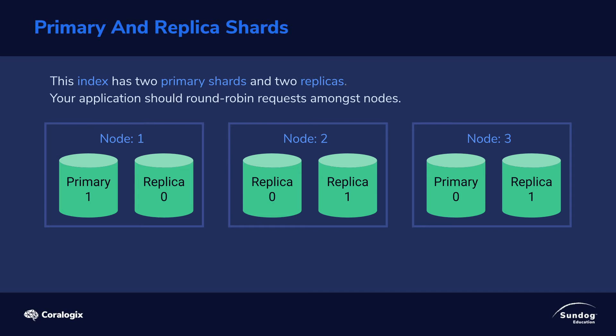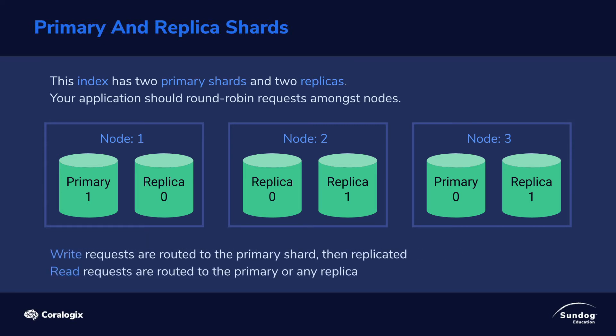You can actually do more than one node per server if you want, but it would be a little bit weird to do that. The design is such that if any given node in your cluster goes down, you won't even see it as an end user — you can handle that failure. I have two primary shards, which are basically the primary copies of my index data, and that's where write requests are going to be routed to initially. That data will then be replicated to the replica shards, which can also handle read requests whenever we want to.